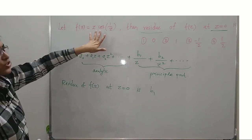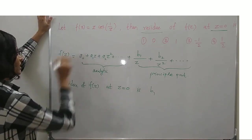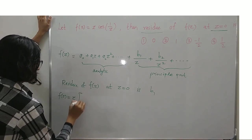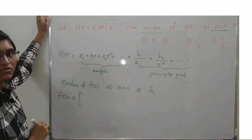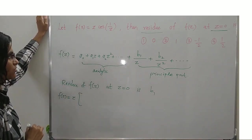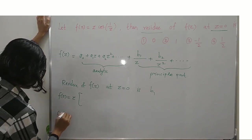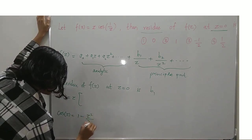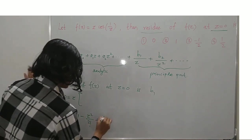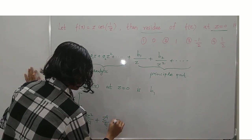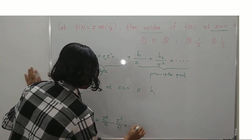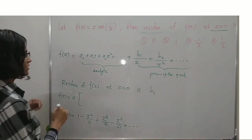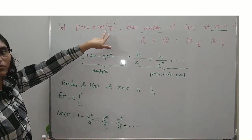Now express the function in terms of a series. Here f(z) = z · cos(1/z). The power series expansion for cos(z) is 1 - z²/2! + z⁴/4! - z⁶/6! + ... So replacing z by 1/z gives the expansion for cos(1/z).